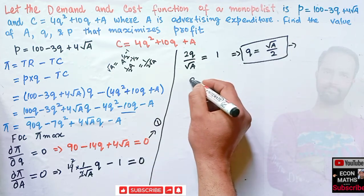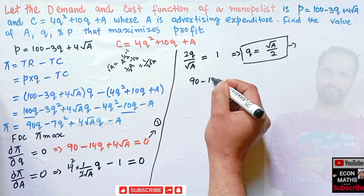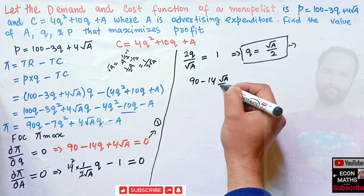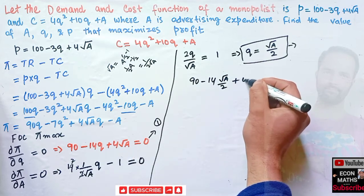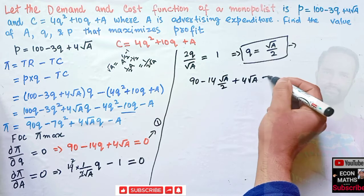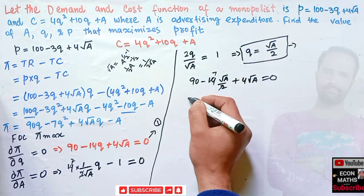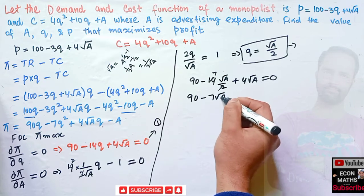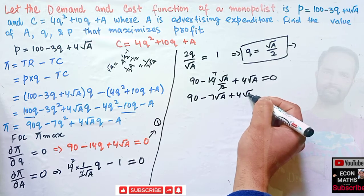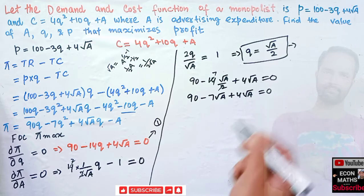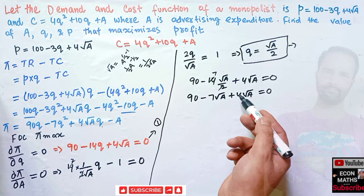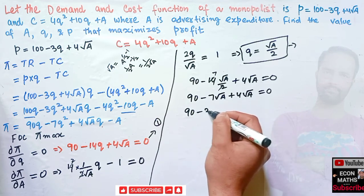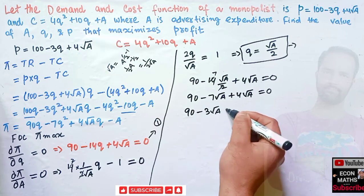Substituting Q = √A/2 into the first FOC: 90 − 14·(√A/2) + 4√A = 0. Simplifying: 14/2 = 7, so we get 90 − 7√A + 4√A = 0. Combining like terms: 90 − 3√A = 0.